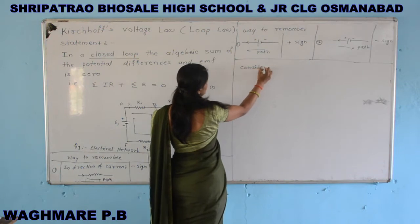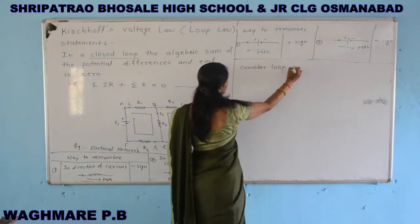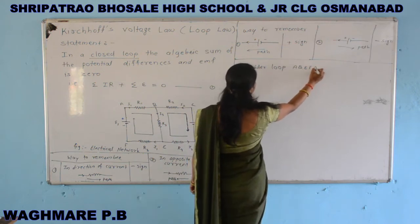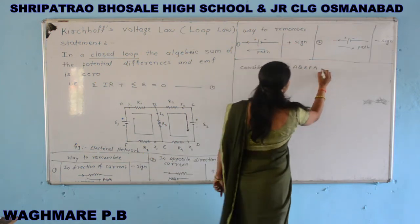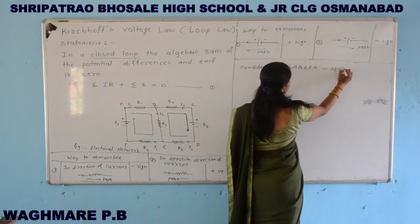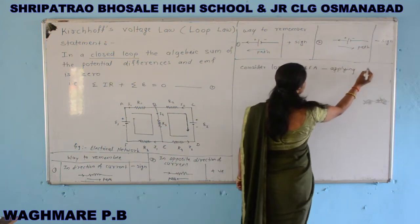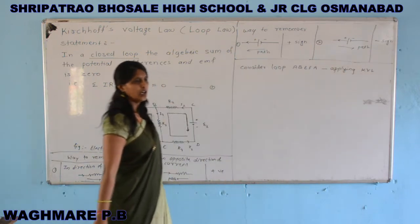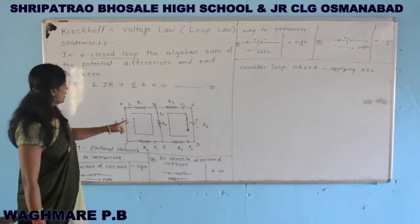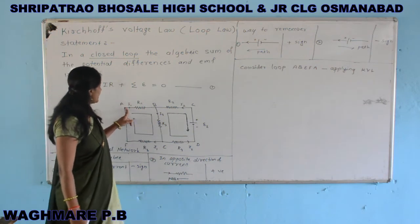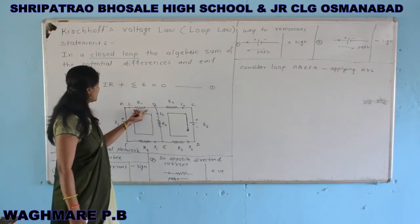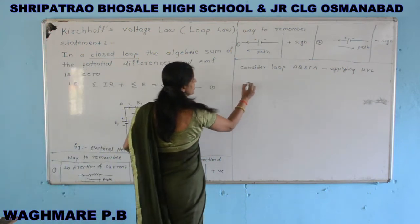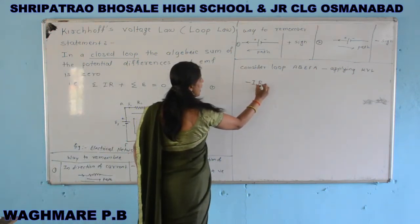Now apply Kirchhoff's voltage law on loop A-B-E-F-A. We traverse from point A to B, and the potential difference across resistance R1 is taken as minus I1·R1, since we are traversing in the direction of current.